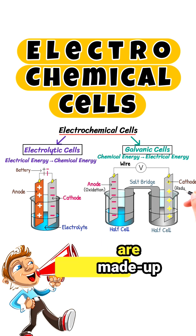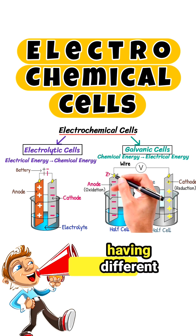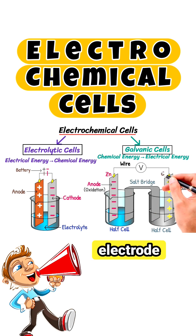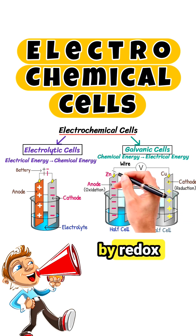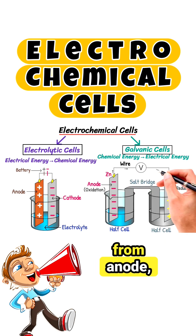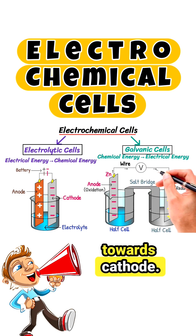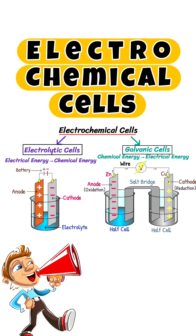Both electrodes are made up of different metals, having different electrode potential. Electrons produced by the redox reaction flow from the anode towards the cathode. This flow of electrons is what we call electricity.